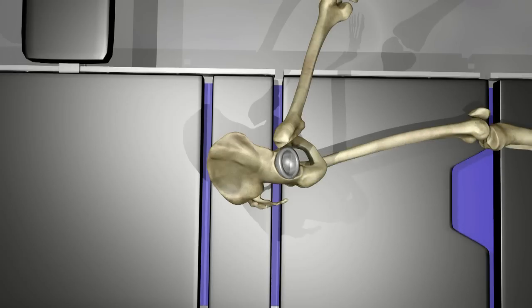A plastic liner is placed inside the metal acetabular component. This keeps the metal components from scraping together.